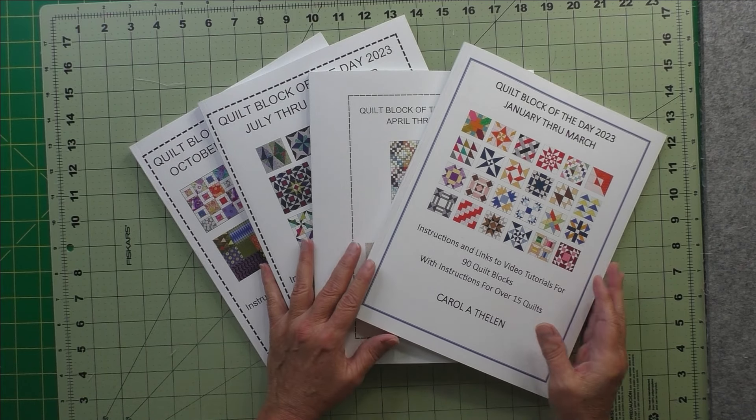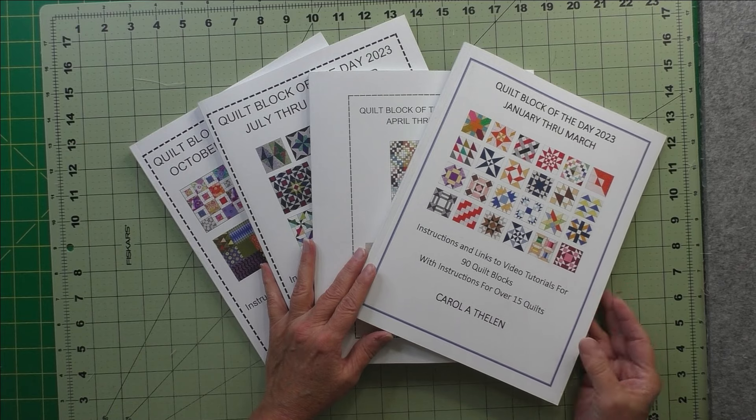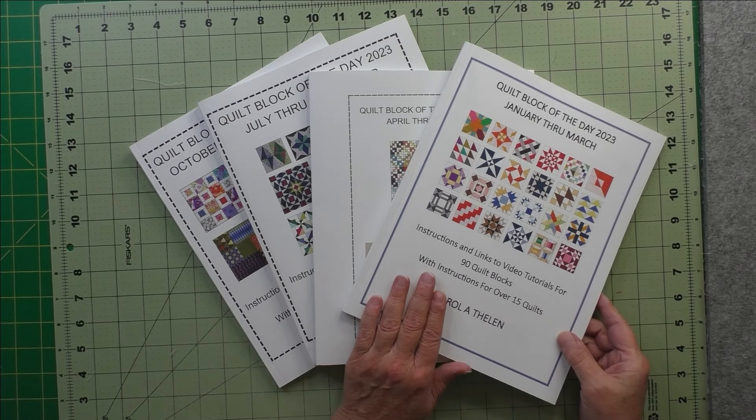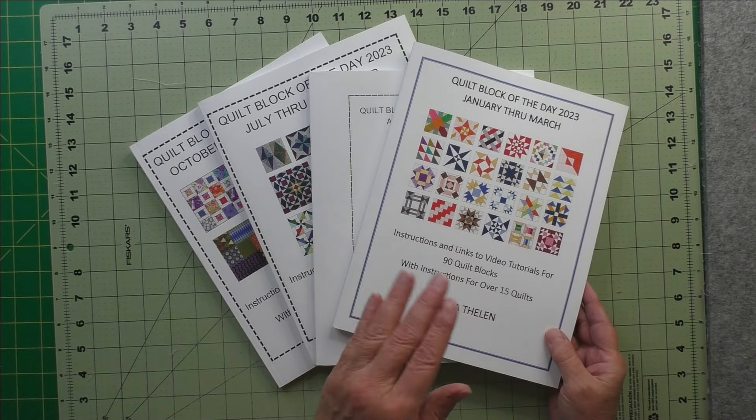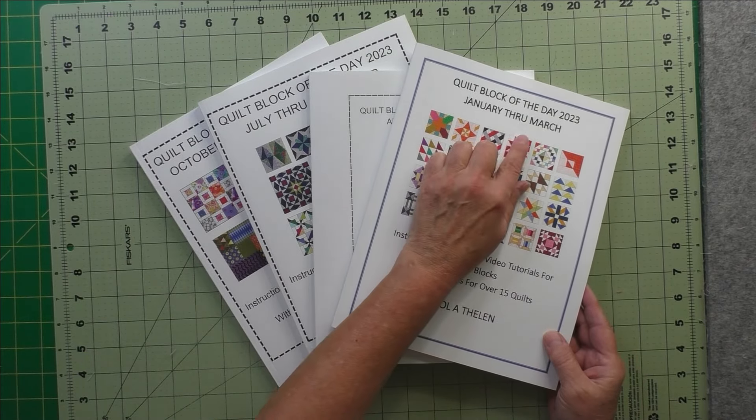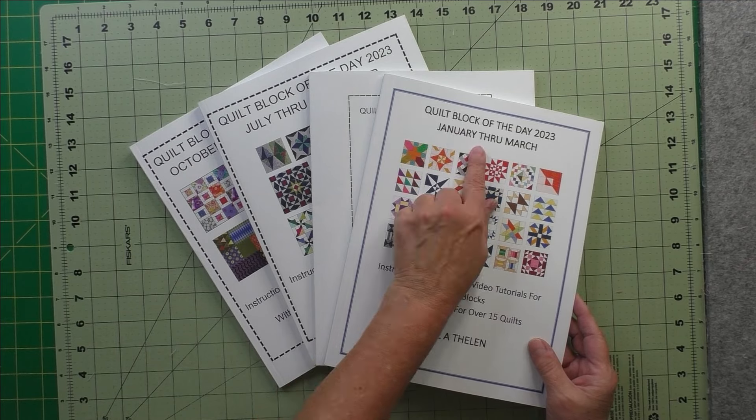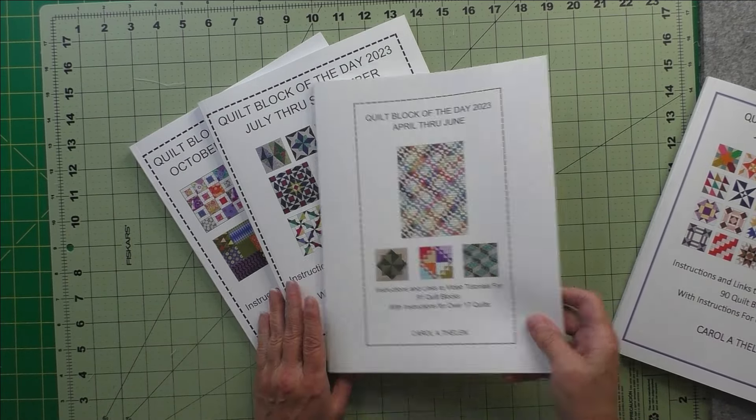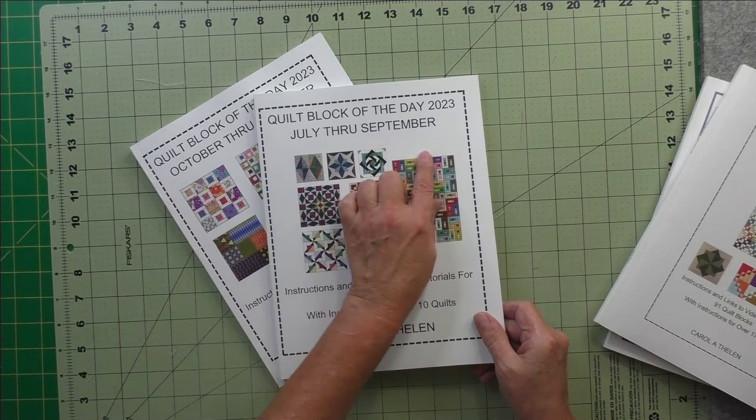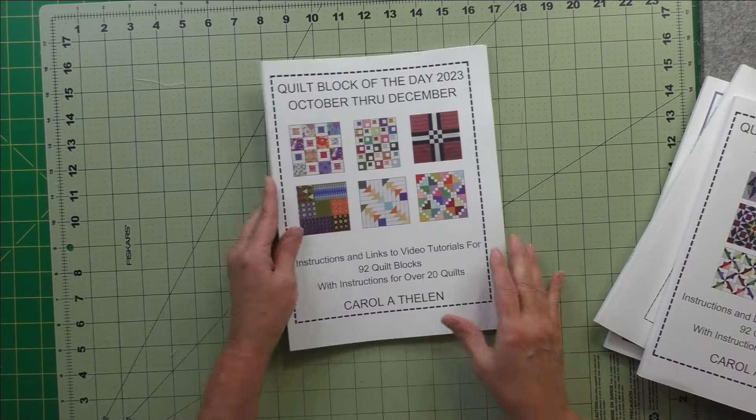If you have been following my Block of the Day 2023, you'll know that after every quarter I publish a book with all of the blocks and quilt patterns for that previous quarter. This is the book for January through March, this is April through June, July through September...